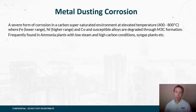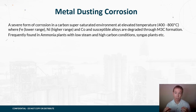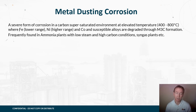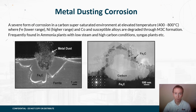The second corrosion mechanism we're going to look at is metal dusting. This is a high-temperature corrosion condition above 400°C where iron is susceptible to M3C carbide formation — the metal literally turns to dust and is removed by the turbulent atmosphere or flow-assisted corrosion. This is frequently found in ammonia plants where we have low steam and high carbon conditions.